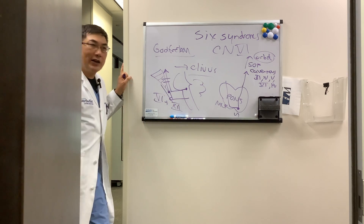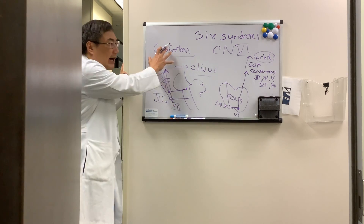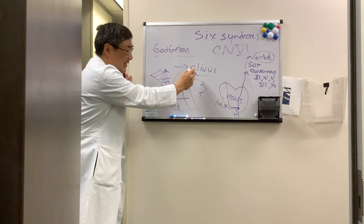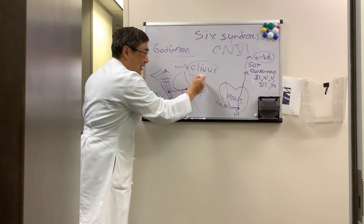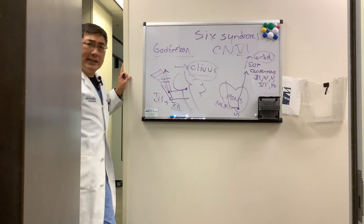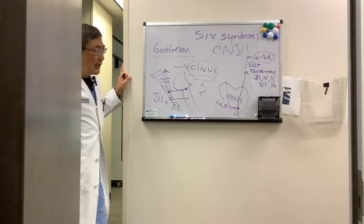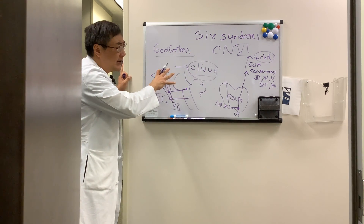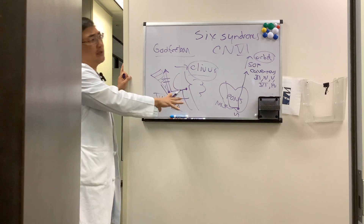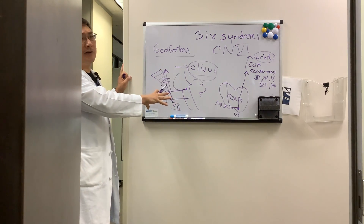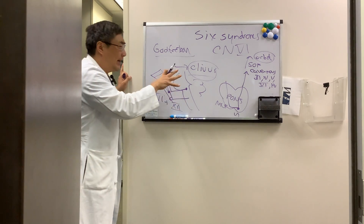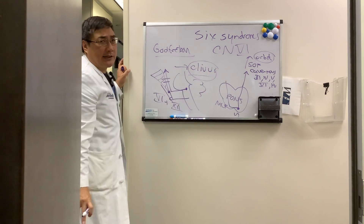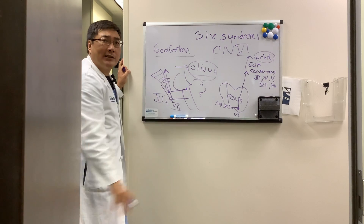A six-twelve combination — Gottfritzen syndrome — is essentially localized to the clivus. Sixth nerve palsy can also be an isolated finding in clival lesions, and that's why you should image a sixth nerve palsy — not only for the non-localizing sixth, but also for the clival sixth.